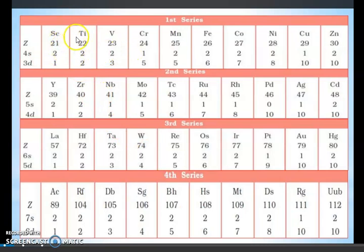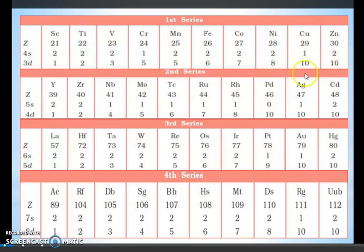The first series elements are: Scandium, Titanium, Vanadium, Chromium, Manganese, Iron, Cobalt, Nickel, Copper, and Zinc. We are going to read them with their names and atomic numbers.